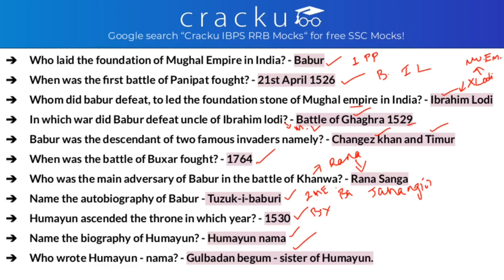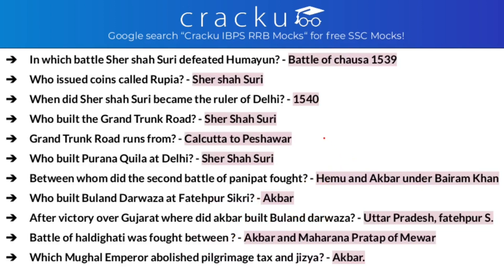In which battle did Sher Shah Suri defeat Humayun? He first defeated Humayun in the Battle of Chausa in 1539. Then in 1540, the Battle of Kanauj — Humayun was again defeated by Sher Shah Suri, after which Humayun fled to Persia. So the answer to 'in which battle did Sher Shah Suri first defeat Humayun' is the Battle of Chausa, 1539.